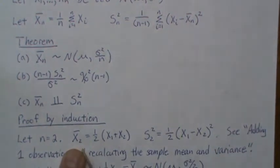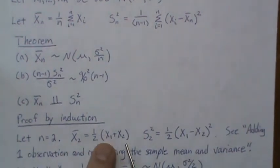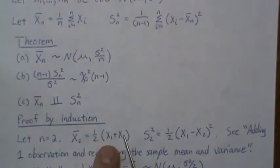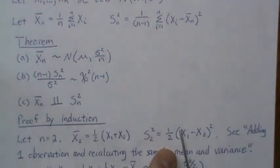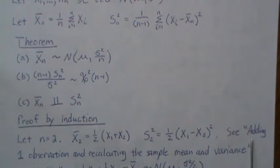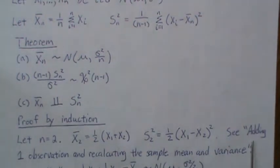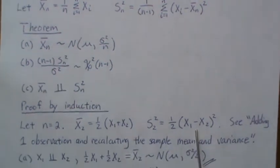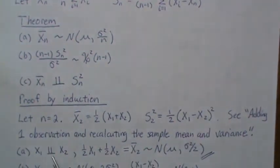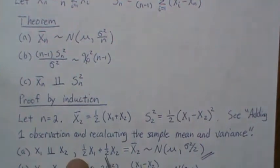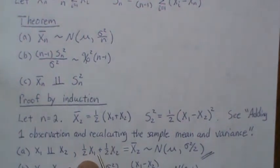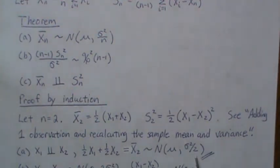For n=2, we can write the sample mean in this fashion. The sample variance can be written like this — and I'm going to make reference to a video I just put out called 'Adding One Observation and Recalculating the Sample Mean and Variance.' Now, X_1 and X_2 are independent because it's a random sample and they're normally distributed, and a linear combination of normally distributed random variables is again normally distributed. This sample mean can be shown to be normally distributed with mean mu and variance sigma squared over two, which satisfies part (a).